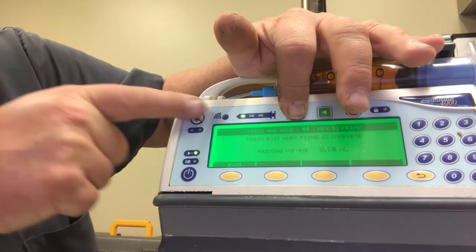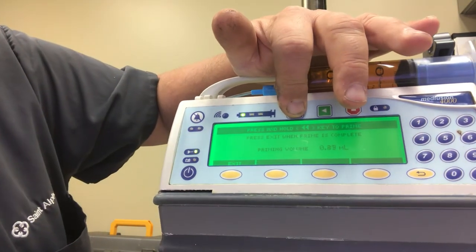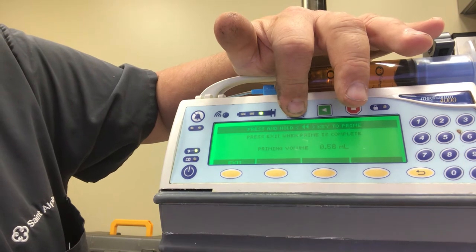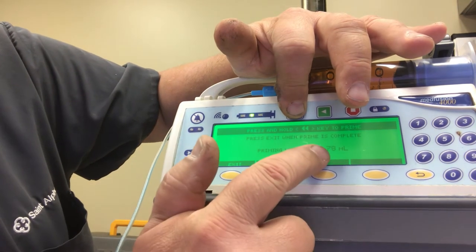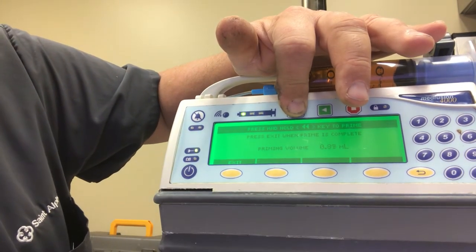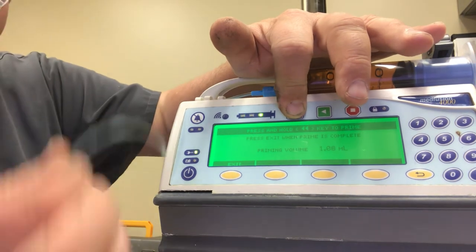This light will also start moving, you can hear it going rar, rar, rar, kind of like that. And it starts counting off how much you've primed and again it's about four mils to prime this tubing.